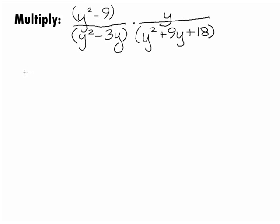In this example, we want to multiply the two rational expressions y squared minus 9 over y squared minus 3y times y over y squared plus 9y plus 18.